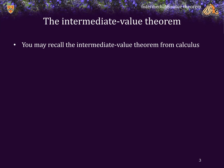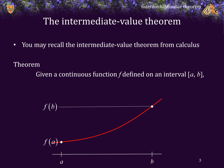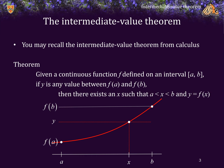You may recall the Intermediate Value Theorem from calculus. If you have a continuous function f defined on an interval [a, b], and the values of f(a) and f(b) are different, then for any value y between f(a) and f(b), there must exist an x between a and b such that y equals f(x).